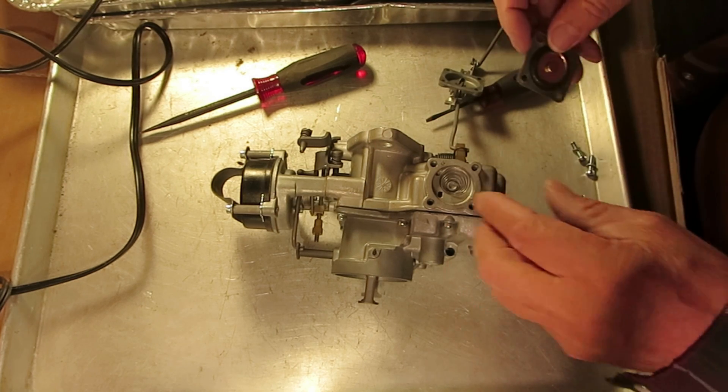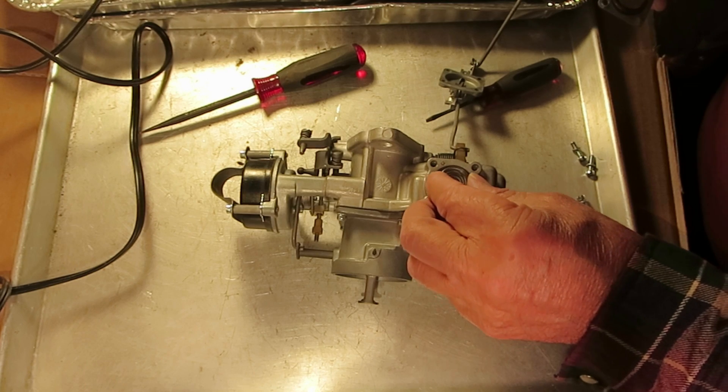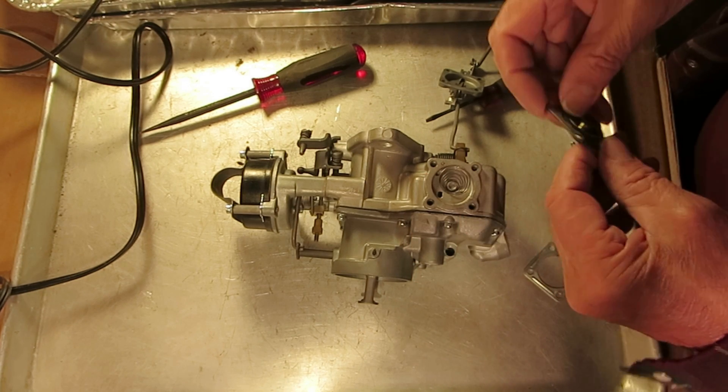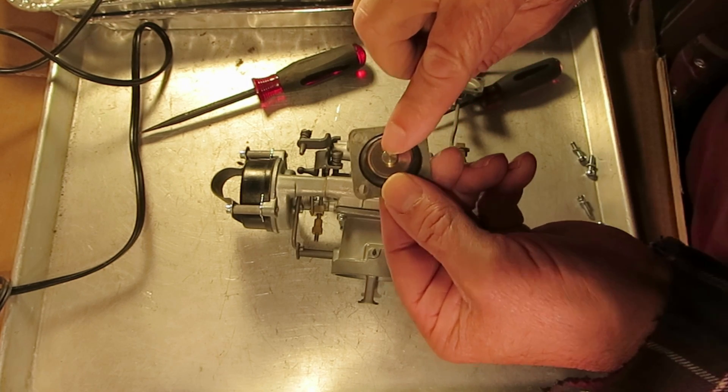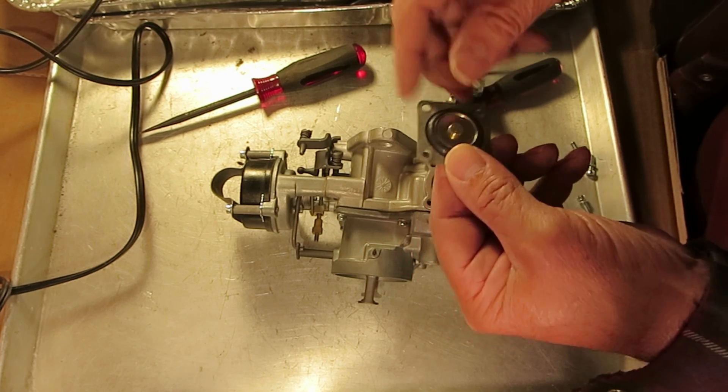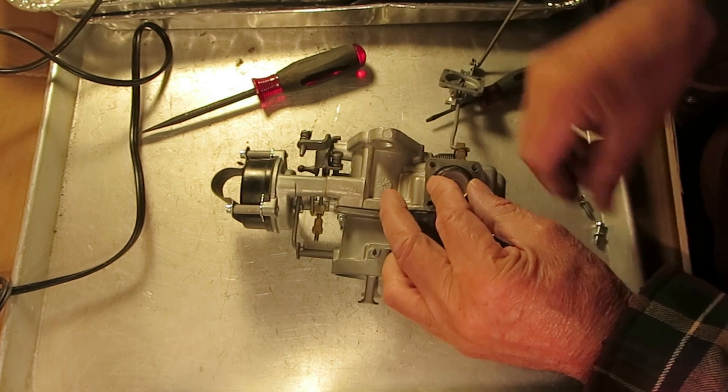Your spring goes on there like so. Put the small end towards the carburetor and then your diaphragm goes on next and this points towards the outside just like so.